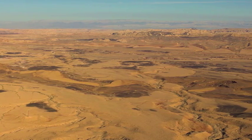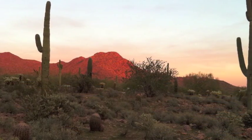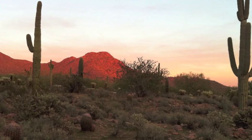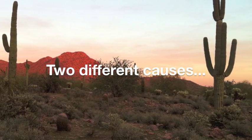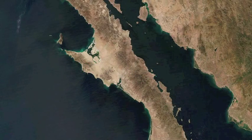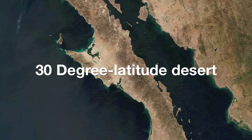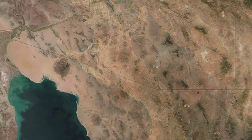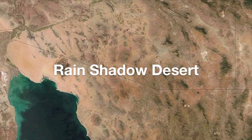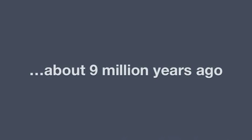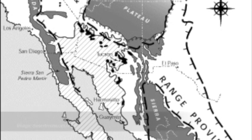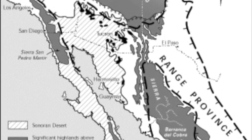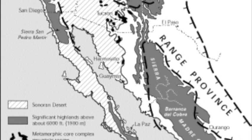Now that we've talked generally about deserts, how does this relate to our Sonoran Desert? Our desert is unusual and interesting in a variety of ways. First, it has two different causes. The southern portion in Baja California and mainland Mexico is a 30-degree latitude desert, while the northern portion in Arizona and southeastern California is a rain-shadow desert. The northern Sonoran Desert formed about 9 million years ago when tectonic activity lifted up mountains in western Mexico, along the southern California coast, and the Colorado Plateau, cutting off the interior area from major water sources.